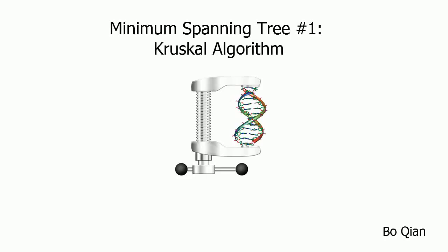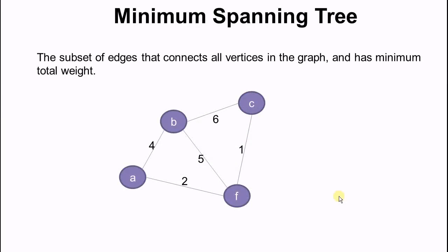Hello everyone. Today we'll find the minimum spanning tree with Kruskal's algorithm. Kruskal's algorithm is implemented with disjoint sets, so my previous video on disjoint sets is a prerequisite for this video. In the previous video we talked about disjoint sets and how they operate, but we haven't talked about how disjoint sets can be useful. Today we'll use disjoint sets to find the minimum spanning tree of a graph.